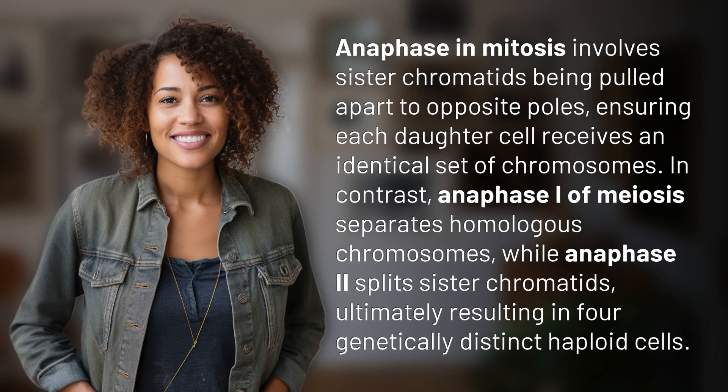In contrast, anaphase I of meiosis separates homologous chromosomes, while anaphase II splits sister chromatids, ultimately resulting in four genetically distinct haploid cells.